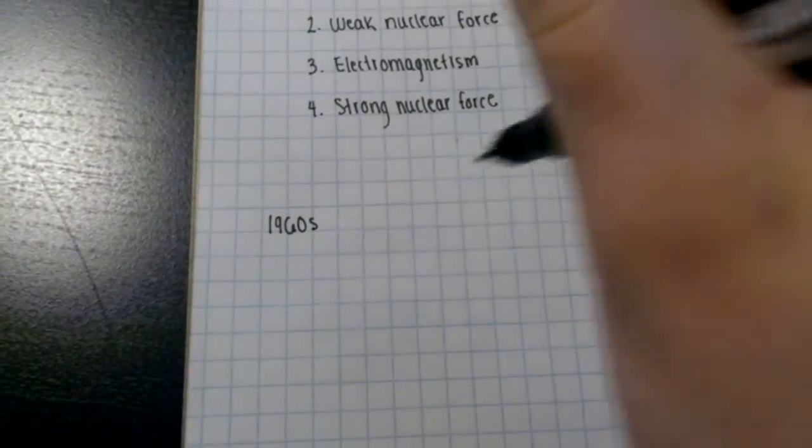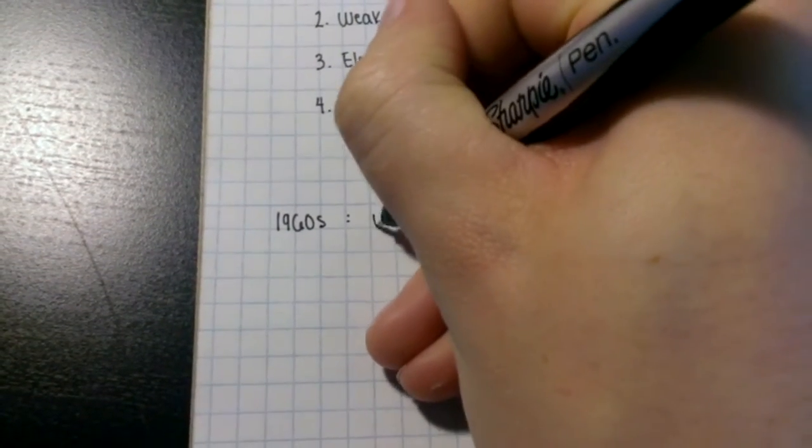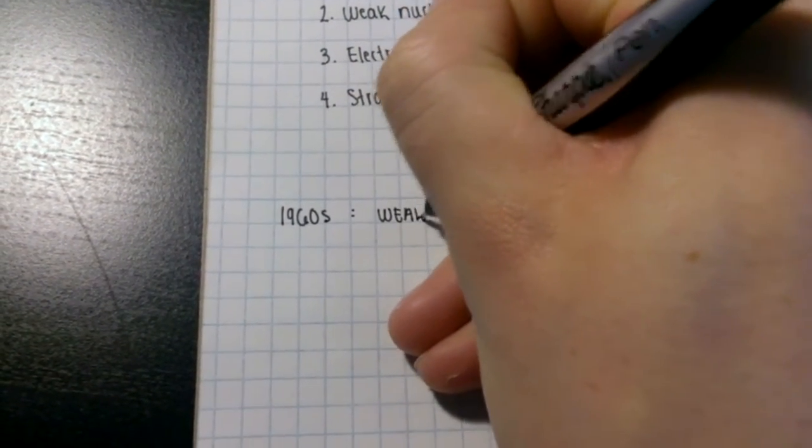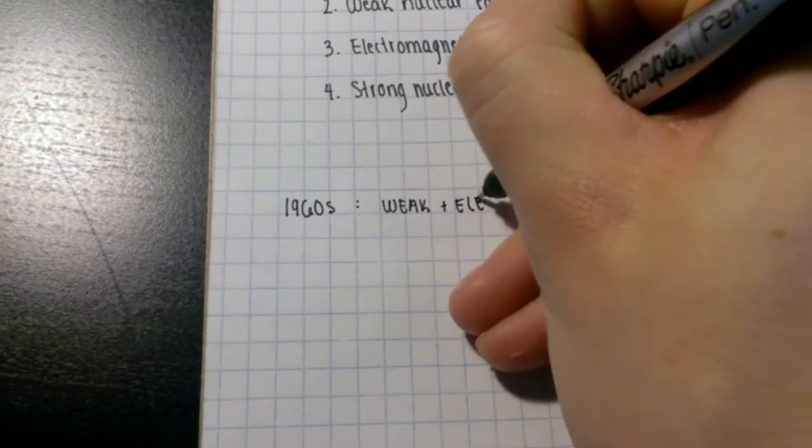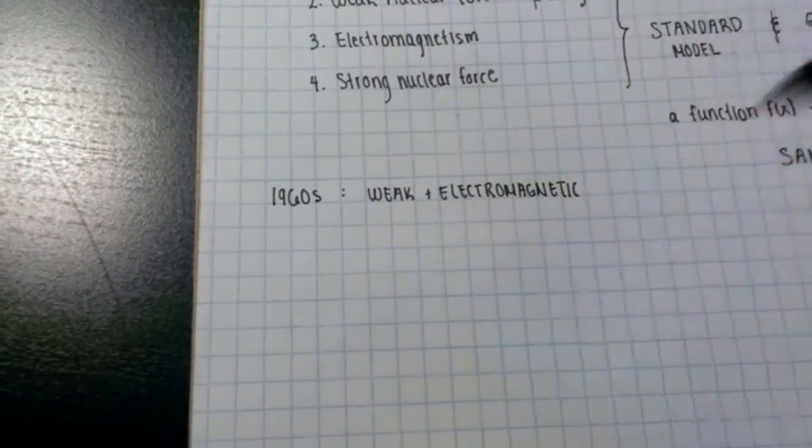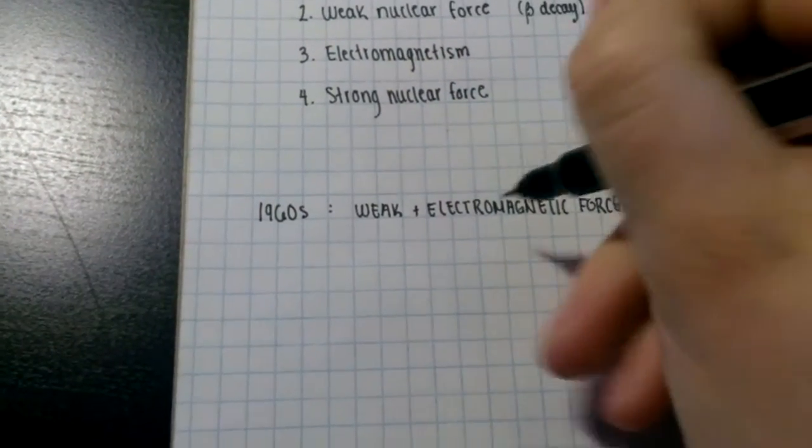In the 1960s, three men called Sheldon Glashow, Abdus Salam and Steven Weinberg discovered that they could formulate a gauge invariant theory of the weak force, but they needed to include the electromagnetic force inside their theory to make it work.